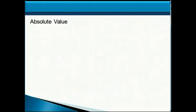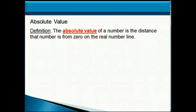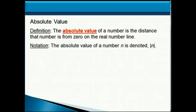So we're going to look at those steps again for adding real numbers using the real number line, but first let's review an important concept called the absolute value. By definition, the absolute value of a number is the distance that number is from 0 on the real number line. The notation we use is that the absolute value of a number n is denoted by n in between two vertical bars.